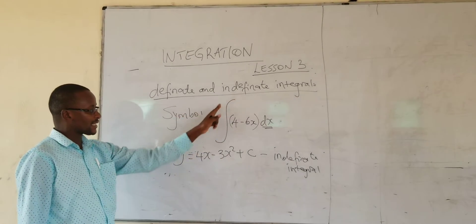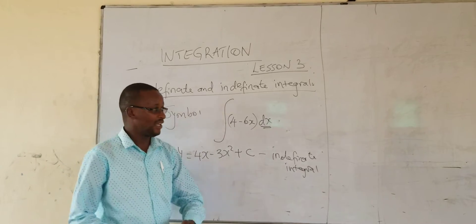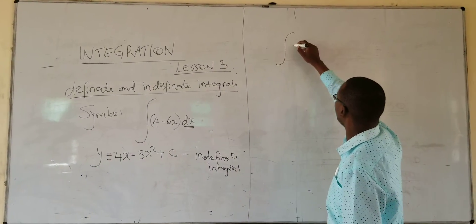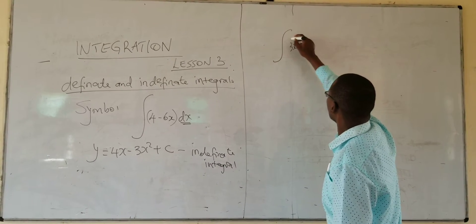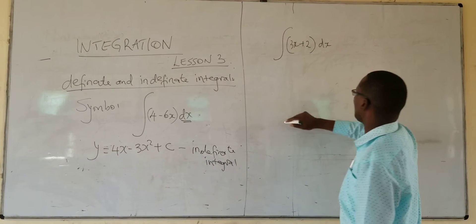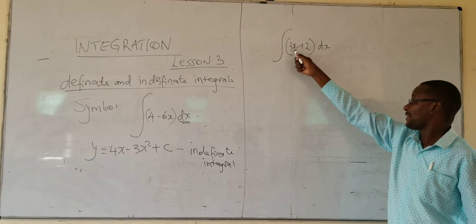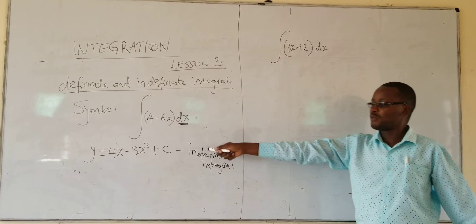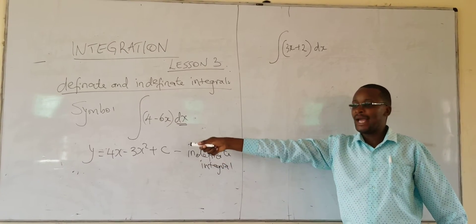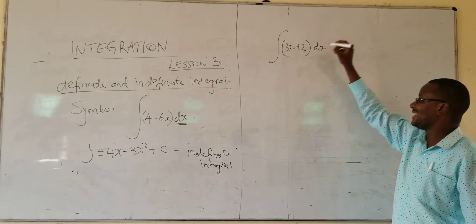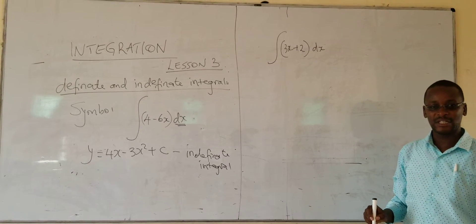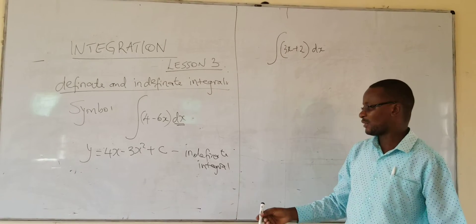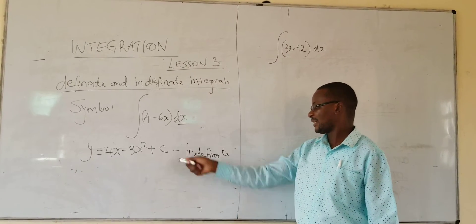So, this is what we call indefinite integral. And the moment you see this sign, it means integrate. So, if I write integrate 3X plus 2 with respect to X, what you get will be an equation of Y in terms of X, and that one is indefinite integration. You have gotten an equation. So, any time you integrate and you get an equation, that one is known as indefinite integration.